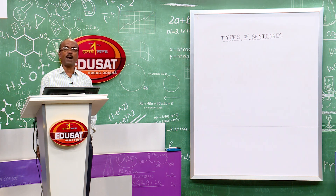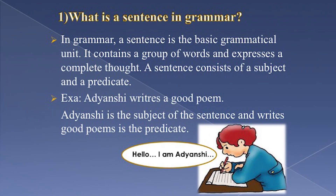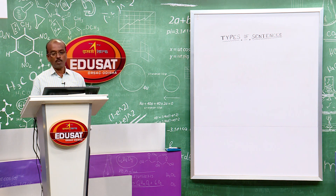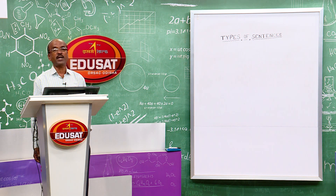Take one example: 'Adhyansi writes a good poem.' Here, 'Adhyansi' is the subject and 'writes a good poem' is the predicate. In this predicate part, 'writes' is the verb. So a sentence consists of two parts — a subject part and a predicate part.